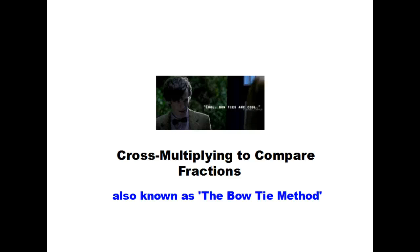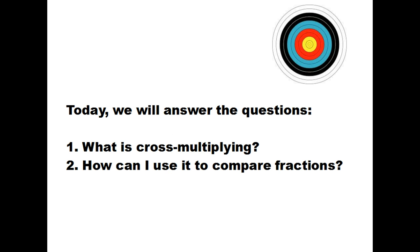This evening we are cross-multiplying to compare fractions. This is also called the bow-tie method — I've heard it called the butterfly method too. So what are we doing? We're going to answer these two questions today: What is cross-multiplying, and how can I use it to compare fractions? Let's get started.